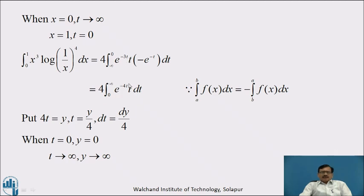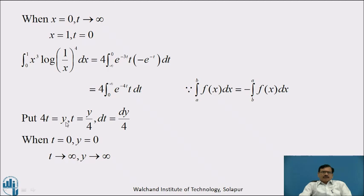This function is not yet in terms of the Gamma Function, so again we use the substitution 4t equal to y, that is, t equal to y by 4, therefore dt equal to dy by 4. Again we change the limits: when t equal to 0, y equal to 0, and when t tends to infinity, y tends to infinity.